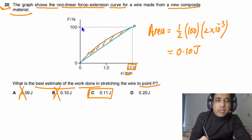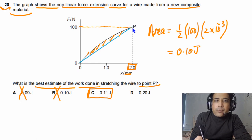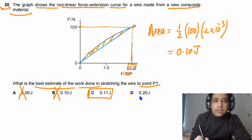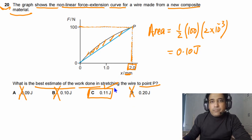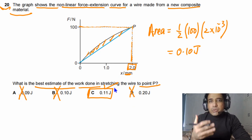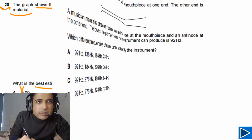The rectangle would give a much larger area than the actual work done, so that is not possible. The answer for this question is C — the best estimate lies between the triangle area and the rectangle area.